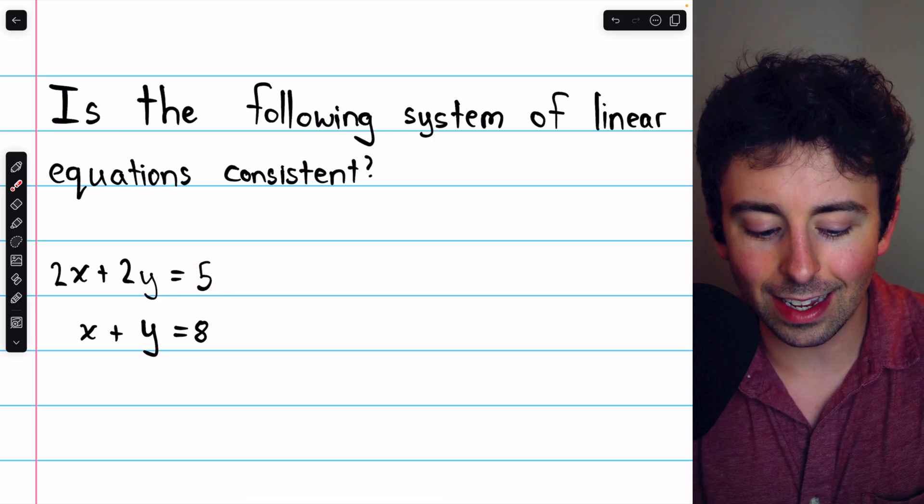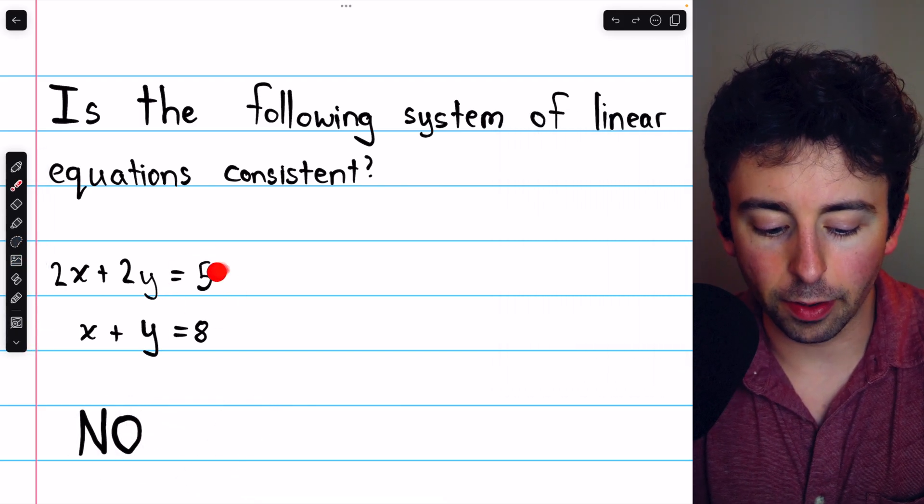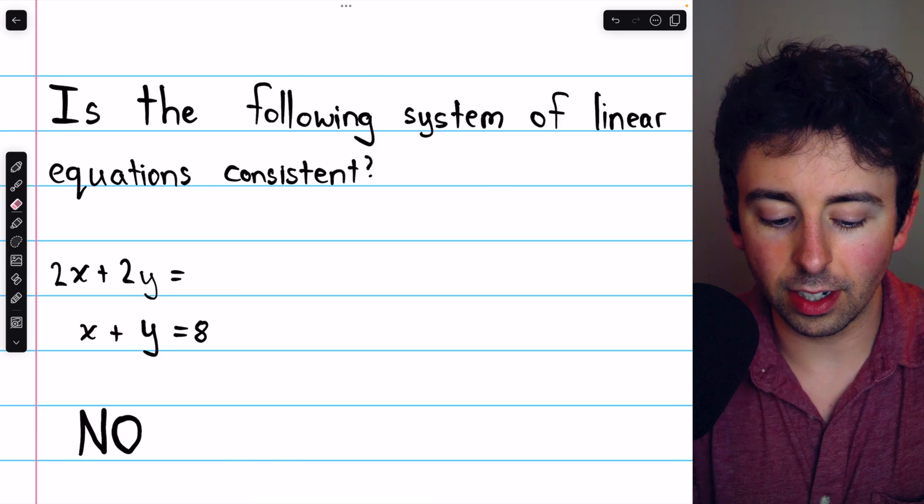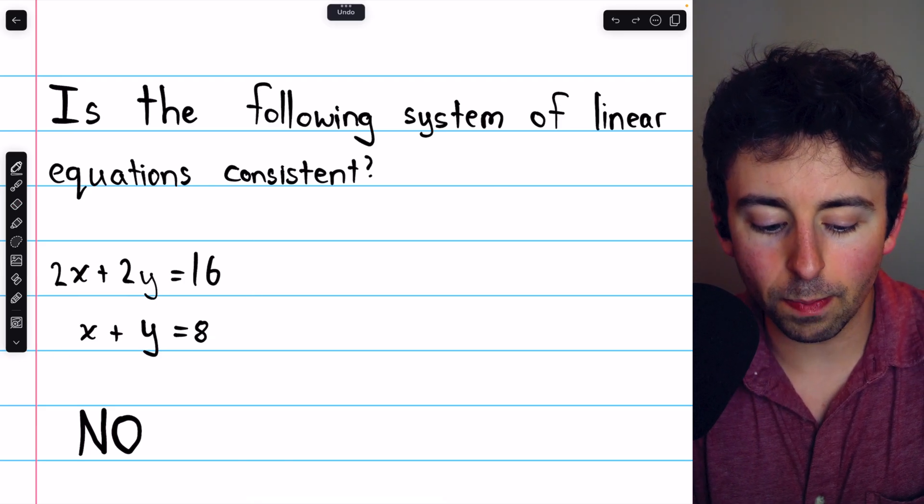So this system is not consistent. In a way, it's the constants that are the problem here. If this constant of 5 was instead 16, then this system would be consistent.